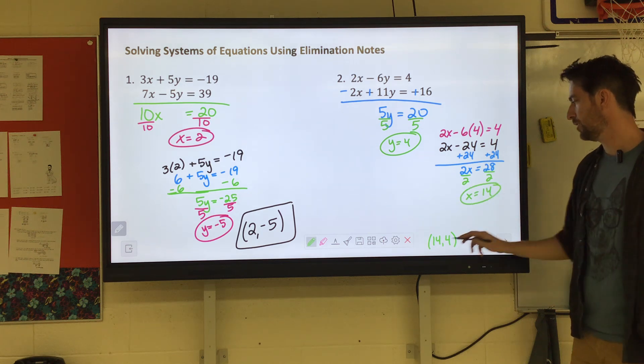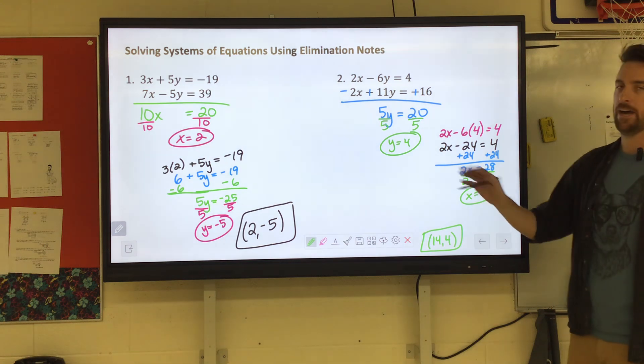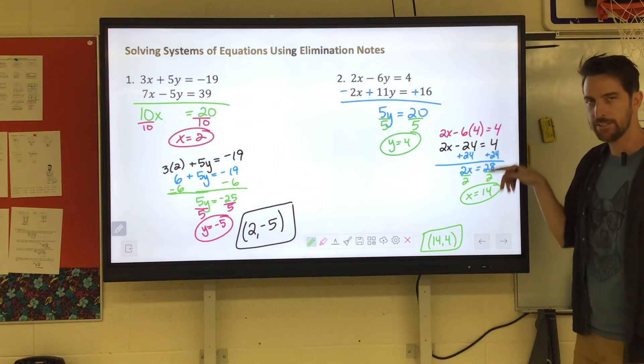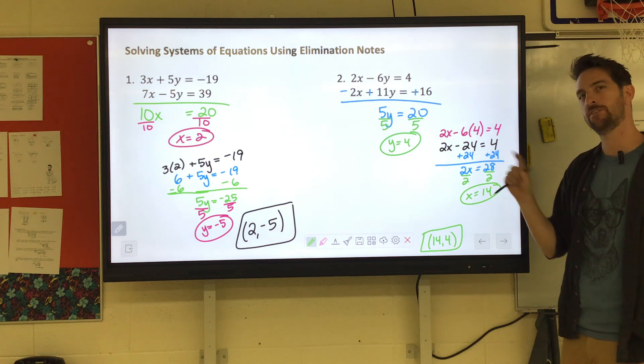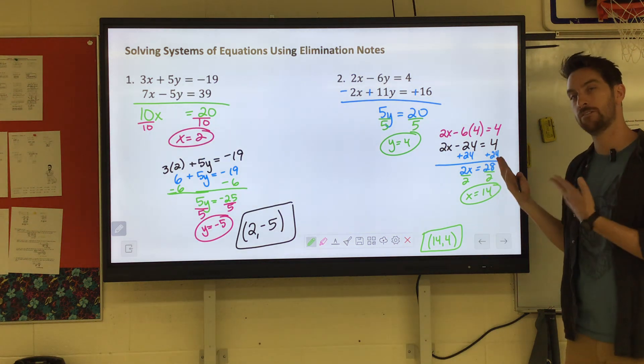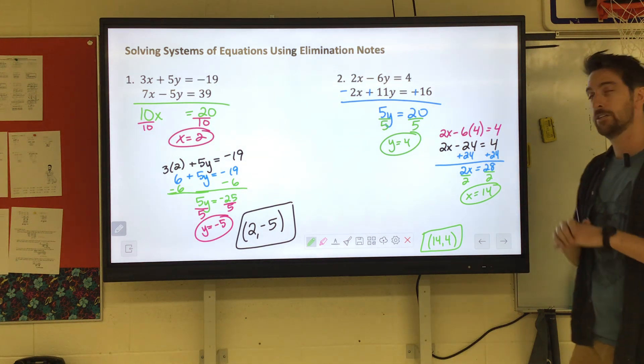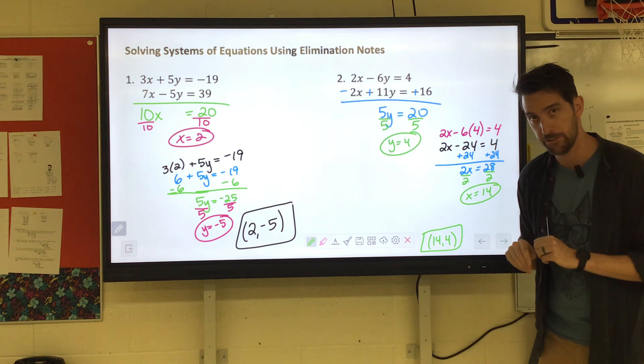Holy cow, look at that. The same coordinate we got the other way. I will argue the math we did this way significantly easier than the math we did the first way. Both ways are possible. This way worked out easier because of how this problem was set up.